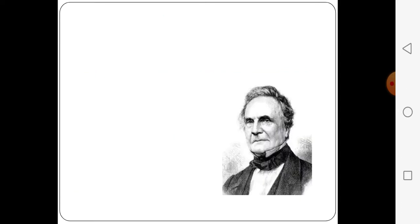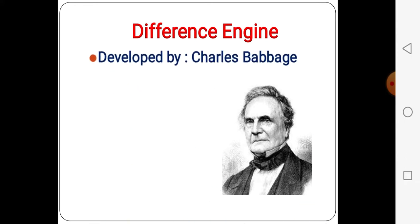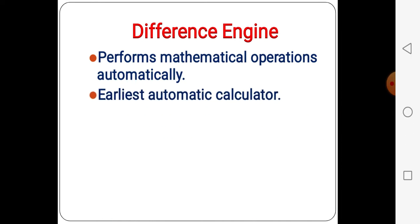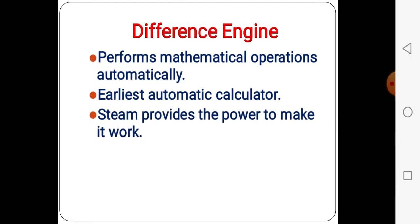The next one is the Difference Engine. The Difference Engine is developed by Charles Babbage. Charles Babbage is known as the father of computers. He gave the concept of a programmable computer for the first time. He developed the Difference Engine in the year 1822. The Difference Engine performed mathematical calculations automatically. It is the earliest automatic calculator.